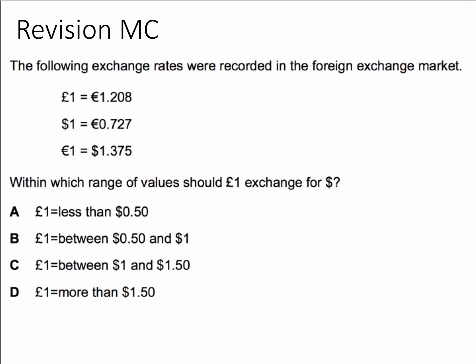Okay, so what did you get for this question? Let's work through the reasoning. We know that one euro buys 82.8 pence, because if one pound buys 1.208 euros, you divide one euro by 1.208 and you get 82.8 pence.